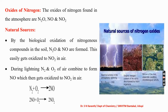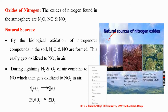The main natural sources of nitrogen oxides are lightning. During lightning, nitrogen combines with oxygen to form nitric oxide, which then gets oxidized to form nitrogen dioxide. Also, nitrogen-containing organic compounds in soil are decomposed by microorganisms, producing nitrous oxide and nitric oxide that further get oxidized to nitrogen dioxide.